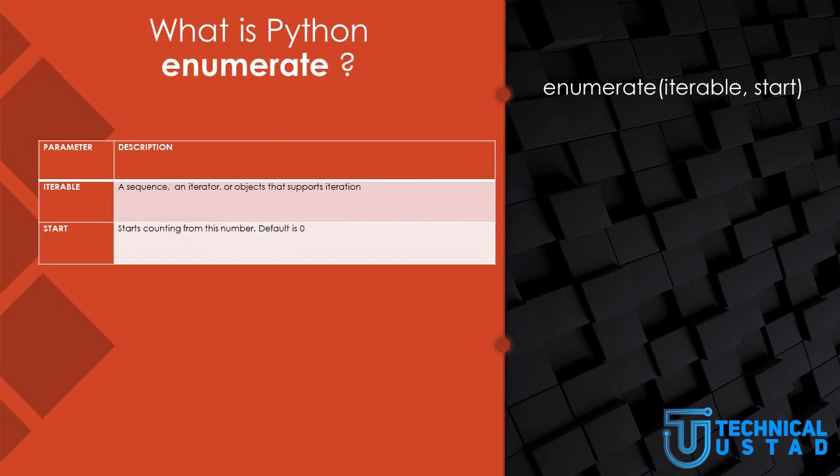So, what is Python Enumerate? A lot of times when dealing with iterators, you might need to keep a count of iterations. Python provides a built-in function Enumerate for this task. The Enumerate method adds a counter to a collection, like a tuple or array, and returns it in the form of an Enumerate object. This Enumerate object can then be used directly in for loops, or be converted into a list of tuples using the list method.